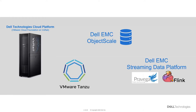vSphere with Tanzu is the re-architecting of vSphere to embed Kubernetes into the control plane of vSphere to unify access to compute, storage, and networking. It allows a user to deploy pods directly into vSphere, known as a vSphere pod, or create developer-managed Tanzu Kubernetes grid clusters which run in virtual machines. We will be deploying both of these in this demo.